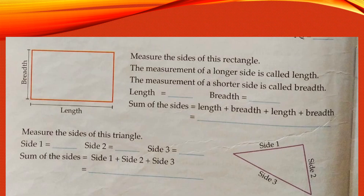Now, children, we are going to measure the sides of a rectangle with the help of a centimeter scale. The measurement of the longer side is called length. The measurement of the shorter side is called breadth. Let us take length as 2 centimeters and breadth as 3 centimeters. The sum of all sides will be length plus breadth plus length plus breadth — because there are two lengths and two breadths.